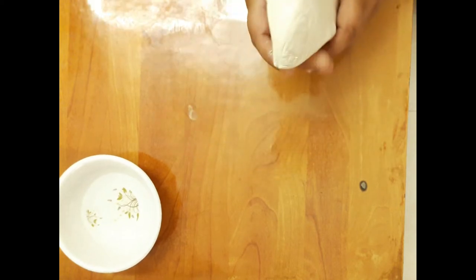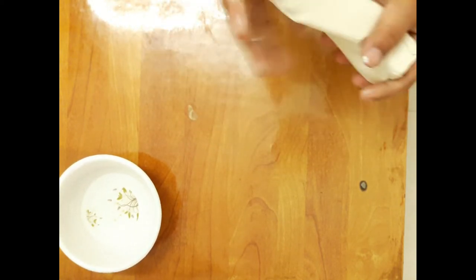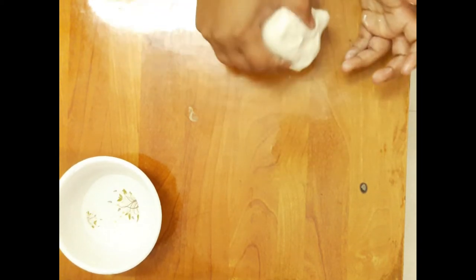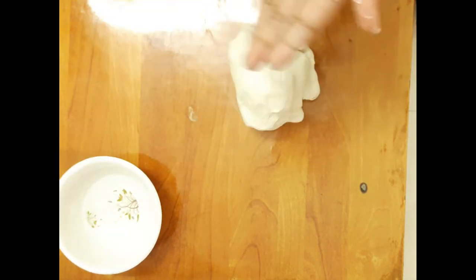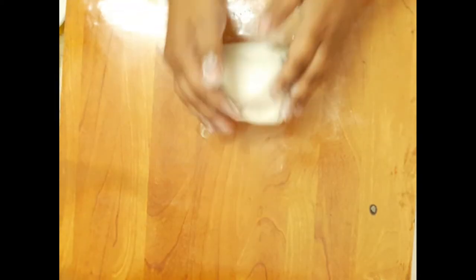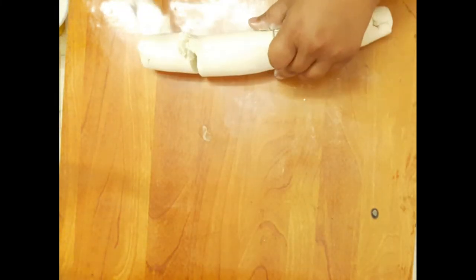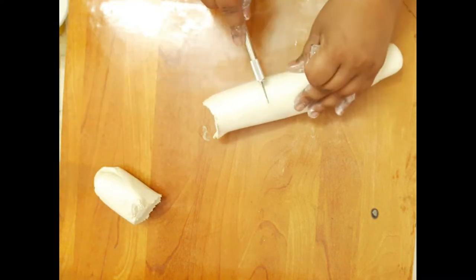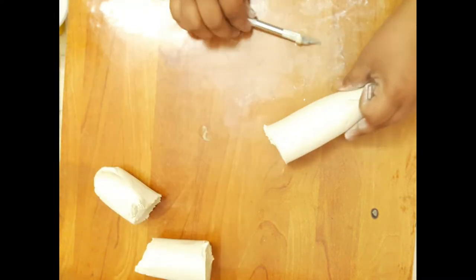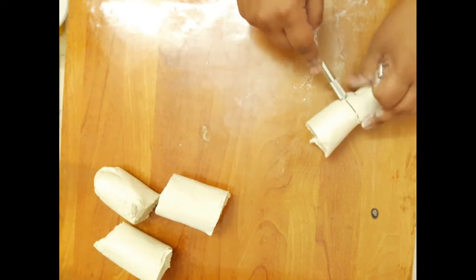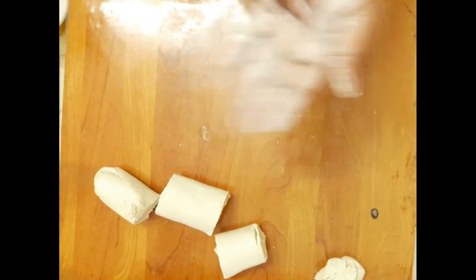We have to knead this clay, just like you would with roti dough. Use some water if you need to soften it. The clay is almost softened, so let's roll it and divide it into parts. Let's use some water.